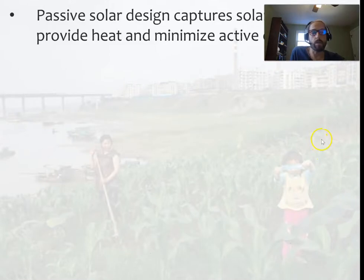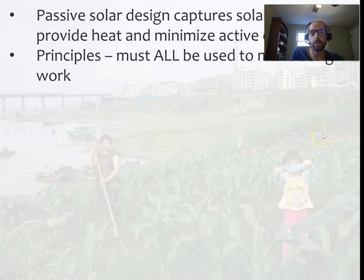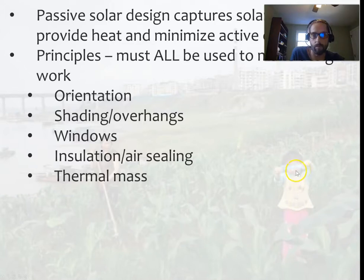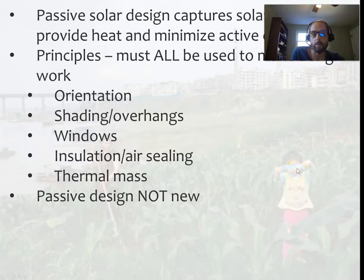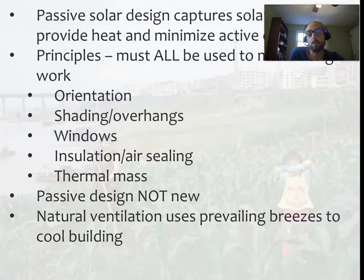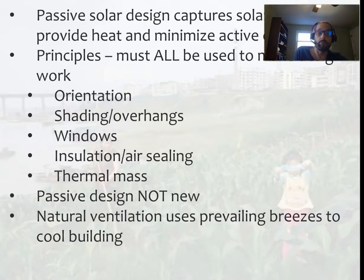So those are the two examples of passive design principles. To summarize passive solar design: capture solar energy to provide heat and minimize active energy use. All five principles — orientation, shading and overhang, windows, insulation and air sealing, and thermal mass — must be deployed at the same time in the same building and planned carefully ahead of time to maximize your passive design. Passive design is not a new concept: it's taking advantage of local natural conditions, working with nature instead of against it. Natural ventilation uses prevailing breezes to cool a building. Hopefully you now have a really good sense of all these passive design principles, particularly passive solar and natural ventilation, and you should now be able to identify examples of these in buildings around you.